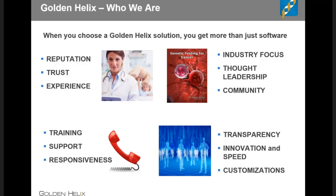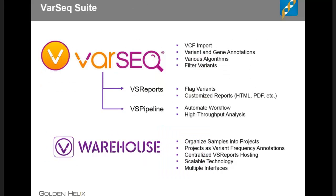Today we are going to be looking at our VarSeq software. The VarSeq technology stack is separated into about four different functionality groups. The main group is VarSeq itself — the desktop application where the majority of the work happens. This is where we import our VCF files, perform variant and gene level annotations, run algorithms like compound heterozygous workflows, and use VarSeq to create filter chains to filter variants down to a set of candidates for further analysis.